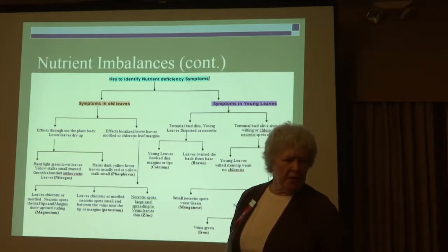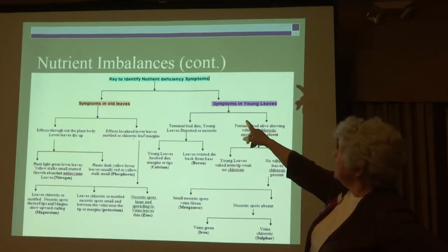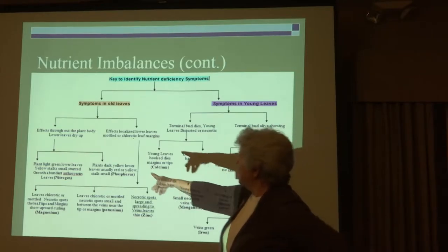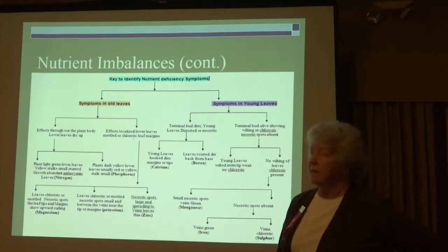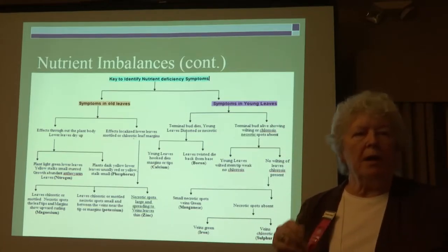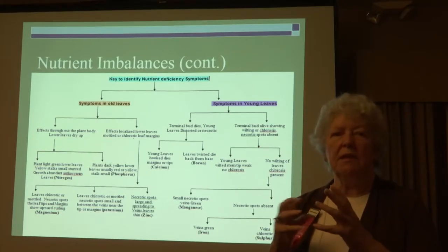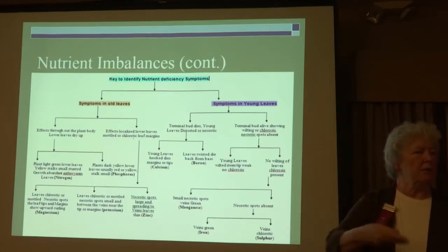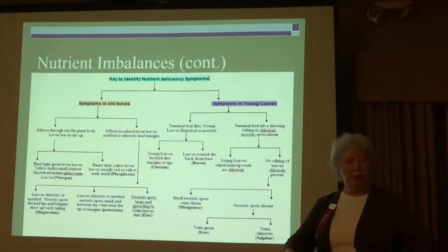There's a really nice diagnostic key you can get off Wikipedia — search for 'nutrient imbalances in plants' and you'll find this chart. In old leaves: if the lower leaves dry up, go down this path; if there are light green lower leaves or yellow stalks, follow that branch. It's a key to what might be wrong. Just because a leaf shows a symptom, be really sure before you treat — some symptoms look just like another one except for one little thing. Rather than scatter trace elements on your soil, it's much better to use organic materials and let the soil critters bring it in.